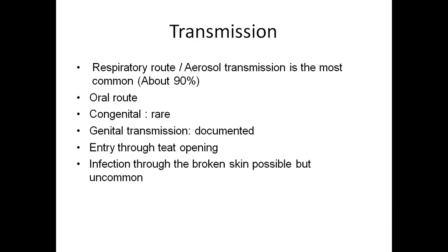About 90% of all bovine tuberculosis cases are transmitted through the respiratory route. In other words, aerosol transmission is the most common route of transmission of Mycobacterium bovis. But it can also be transmitted by other routes: oral route, congenital route, genital transmission, directly through openings or broken skin.